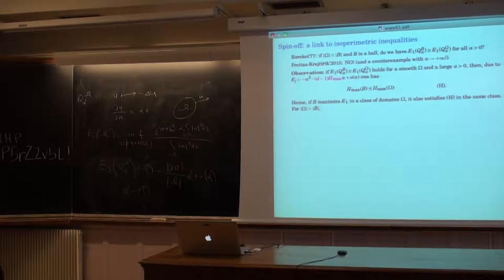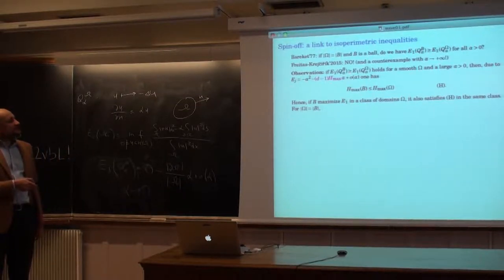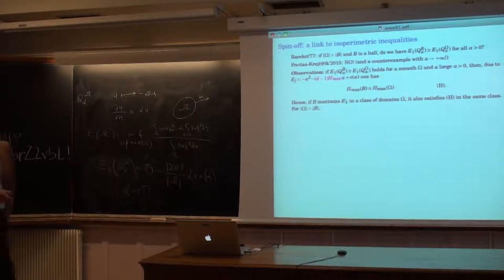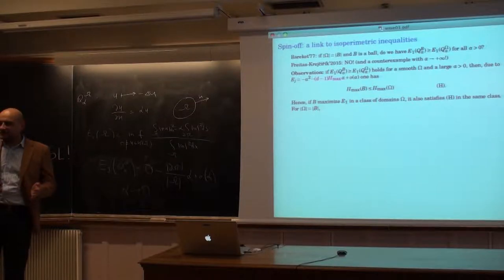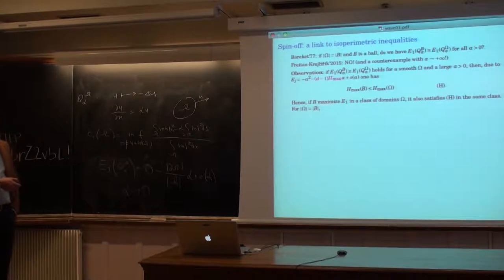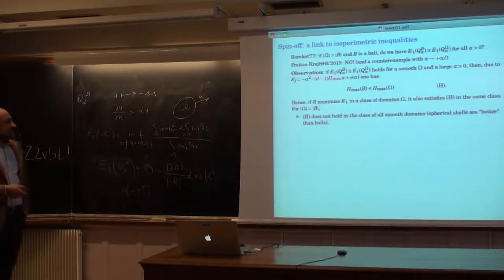Just to recall: we have the asymptotics E_1 ~ −α² − 2H_{max}(Ω)·α + ..., and in this quantity the only geometric information in the first-order asymptotic is the maximum of the mean curvature. If the ball maximizes the first eigenvalue in a class of domains of fixed volume, then the maximum of the mean curvature for the ball should be smaller than for any other domain with the same volume. One easily sees that this property does not hold in the class of all smooth domains.